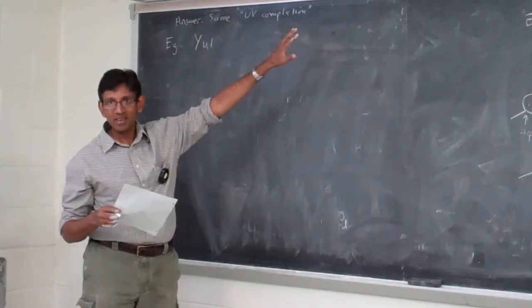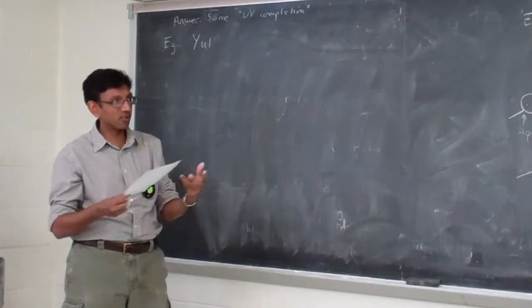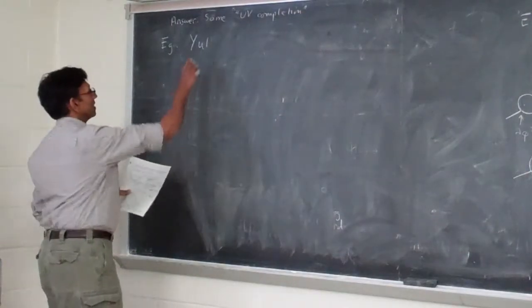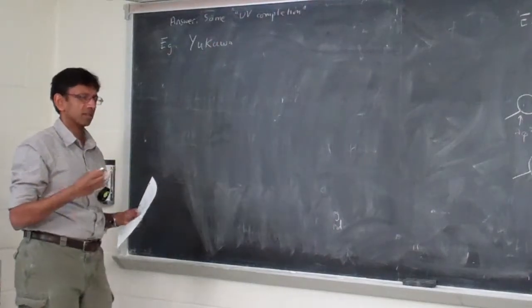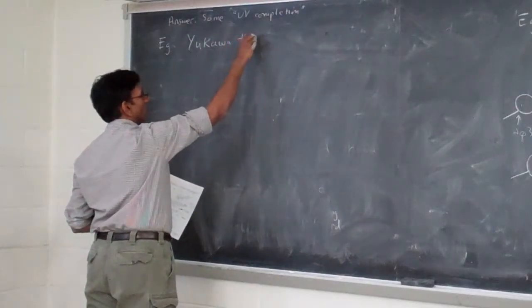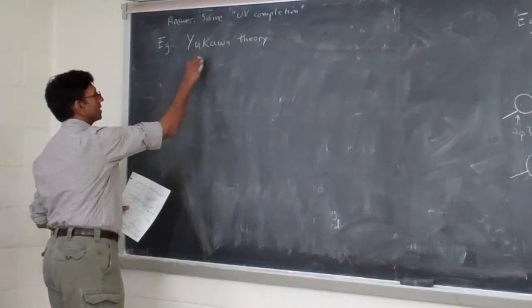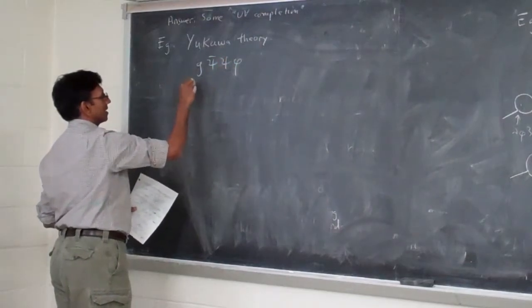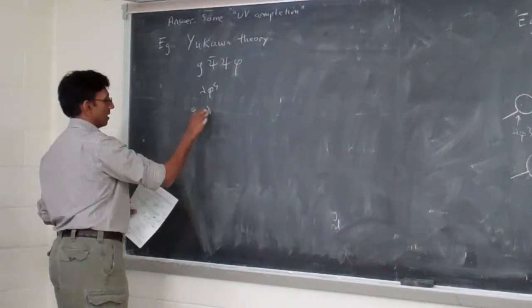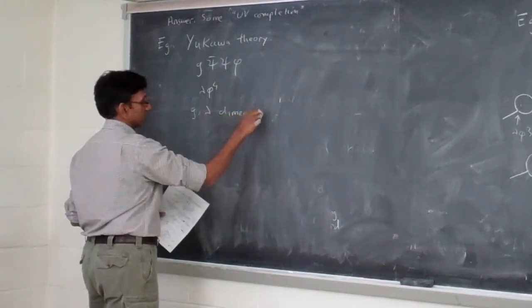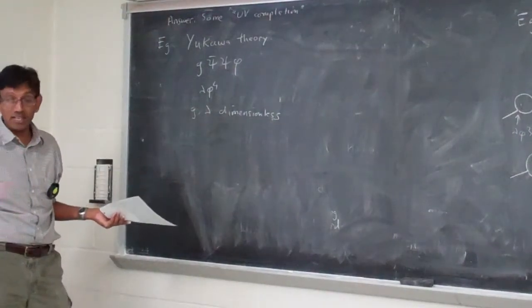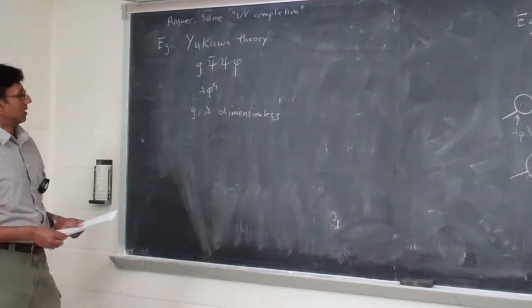How could there be a normalizable theory at work and yet as an experimentalist and phenomenological theorist you only piece together a non-renormalizable theory? The simplest example with all the spirit of the standard model is Yukawa theory. The Yukawa theory has coupling g psi-bar psi phi, plus lambda phi^4, and these couplings are dimensionless — so this is an example of a renormalizable theory, just as lambda phi^4 by itself is a renormalizable theory.